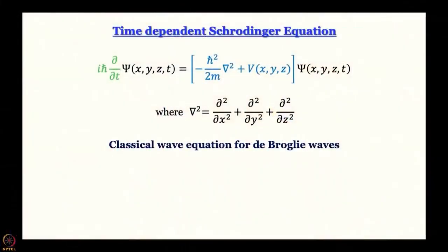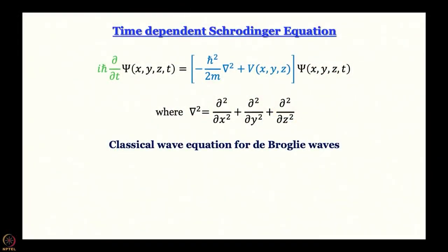So far, we have the time-independent Schrödinger equation, which is essentially the classical wave equation for de Broglie waves. On the left-hand side we have the time-dependent operator, and on the right-hand side the Hamiltonian operator, which is time-independent and space-dependent. We have abbreviated ∂²/∂x² + ∂²/∂y² + ∂²/∂z² by the Laplacian, ∇².